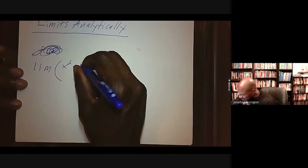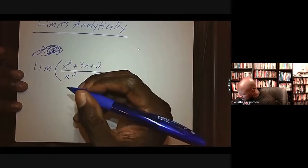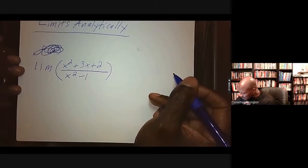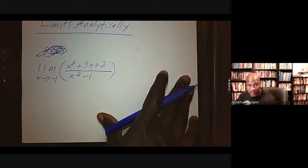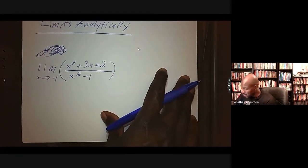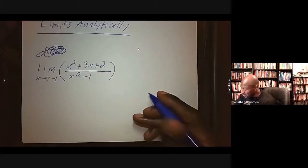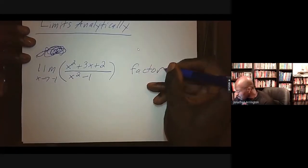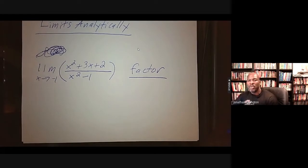I really want to find the limit of some function f(x). So the limit of x squared plus 3x plus 2 over x squared minus 1, as x goes to negative 1. The key for finding these limits analytically — the key skill — is to factor. That's all you have to be able to do is to factor, and you'll be able to find these limits.